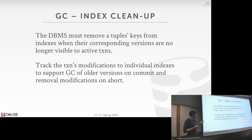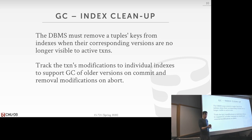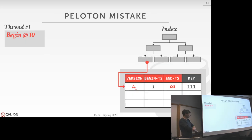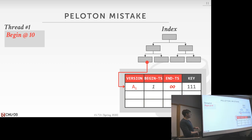In Peloton we did something really problematic. We were doing append-only, oldest-to-newest. When a transaction updated an attribute, we'd append a new tuple and add a new index entry. But when the same tuple was updated again, instead of inserting a new index entry we would overwrite the previous one. Over multiple updates we'd lose track of intermediate keys, so if a transaction aborted we'd only clean up the final key, leaving orphaned keys in the index — causing false 'key already exists' errors in unique indexes.